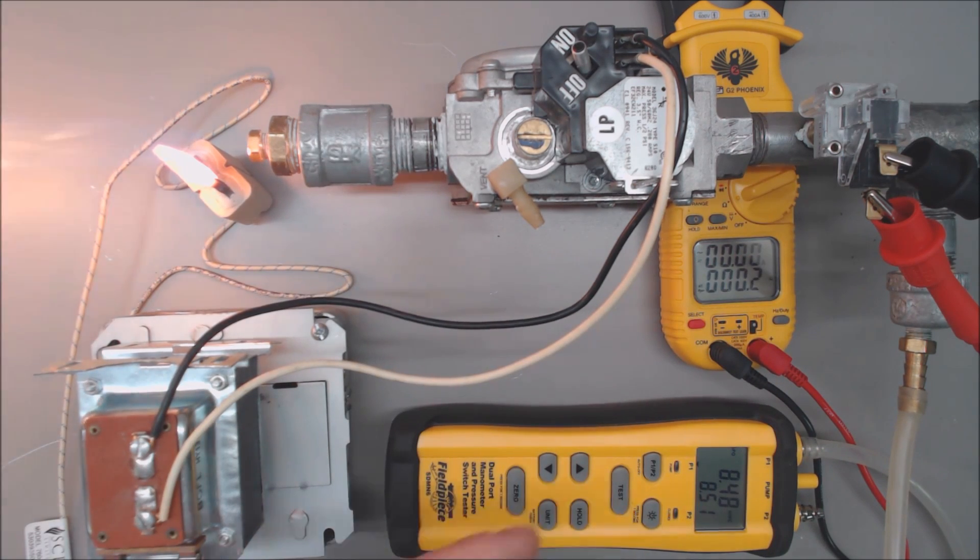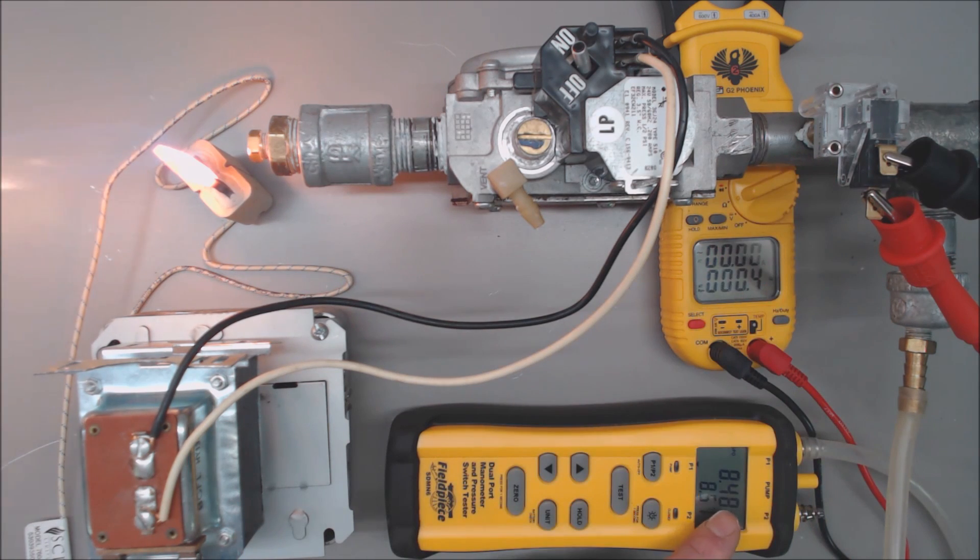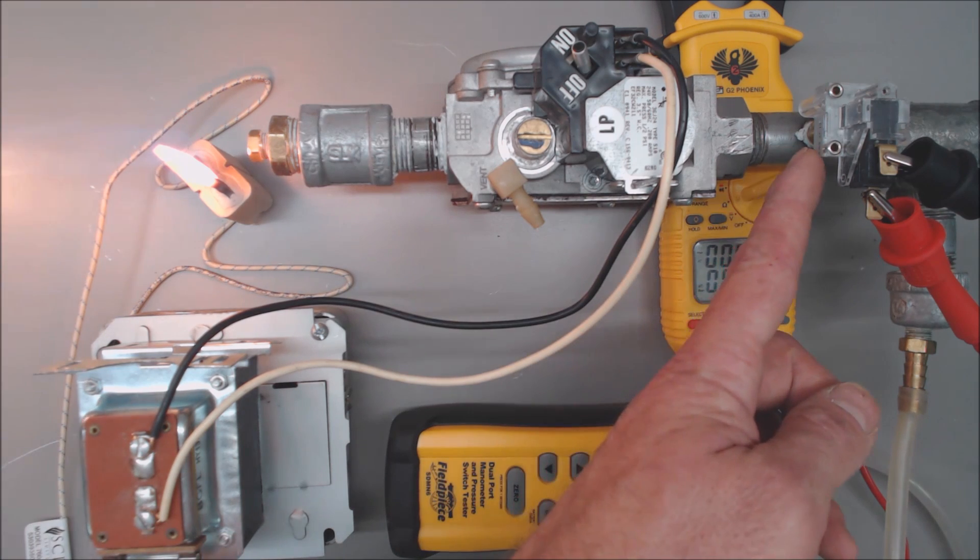So now that we know when the pressure switch ends up opening and closing, let's go ahead and limit the gas flow even further to see what would happen if this was not installed on a natural gas to propane conversion.